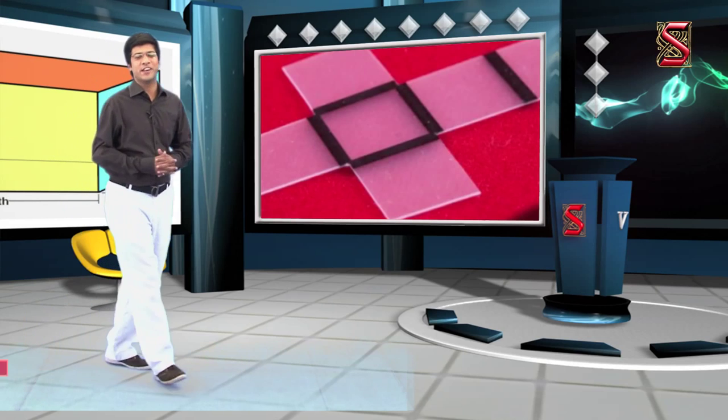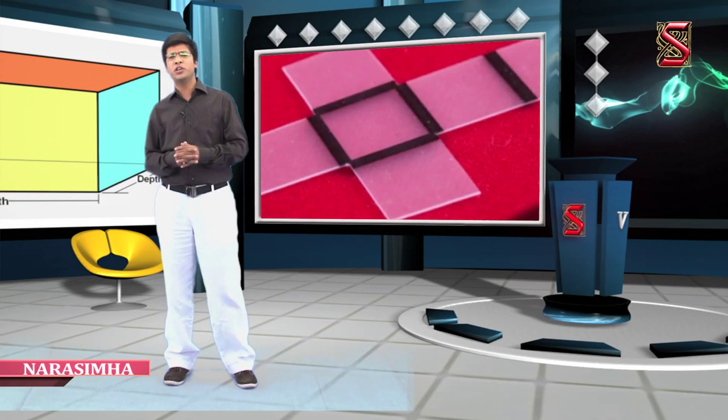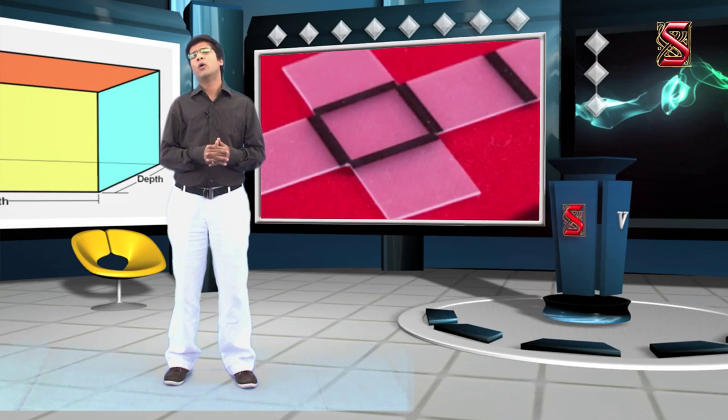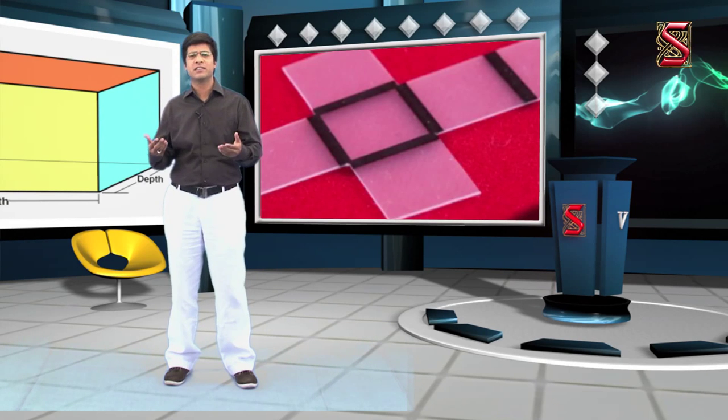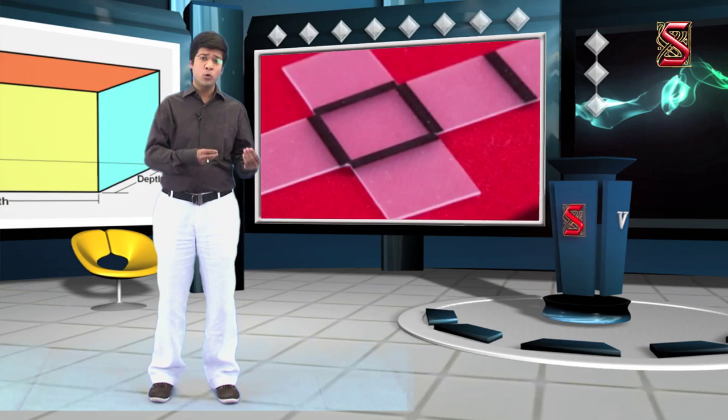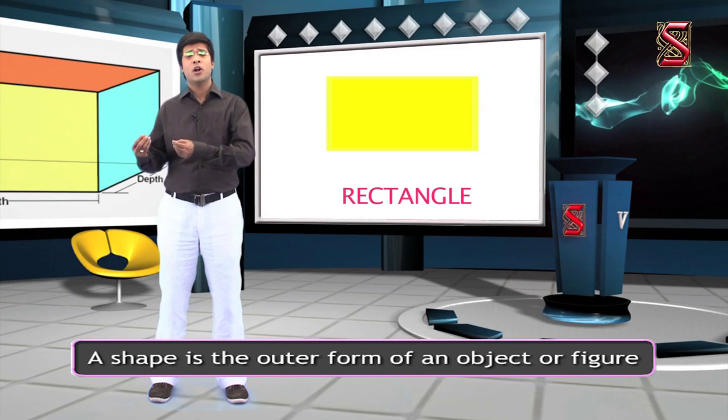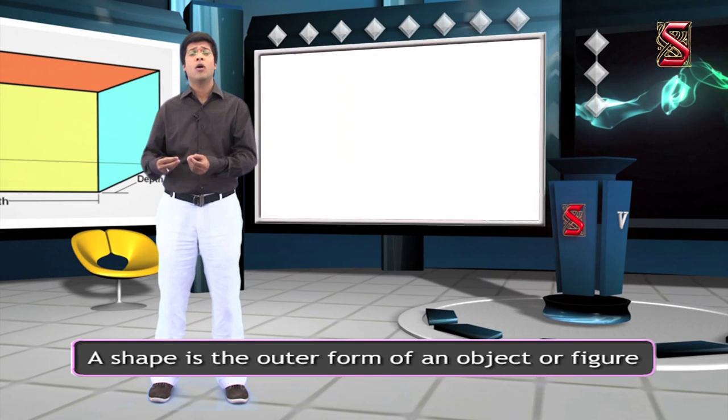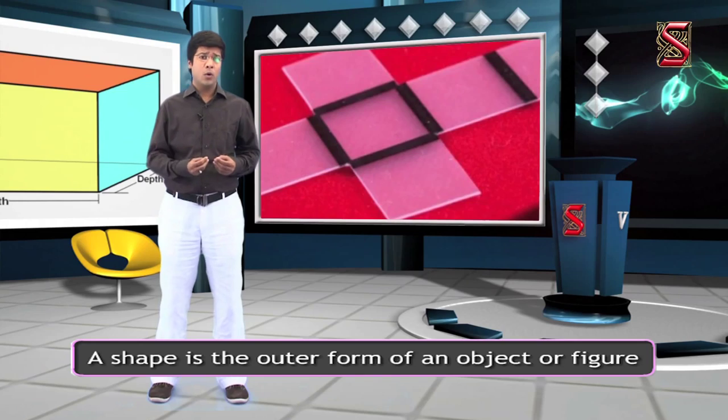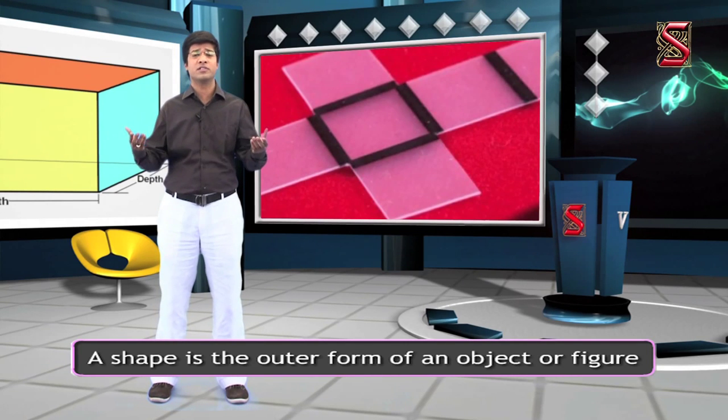Hi kids, how are you doing today? Good to know. So today I'm out here to teach you about shapes and designs. Now, a shape is the outer form of an object or a figure, such as a circle, rectangle, square, or a triangle. There are all kinds of shapes all around us.